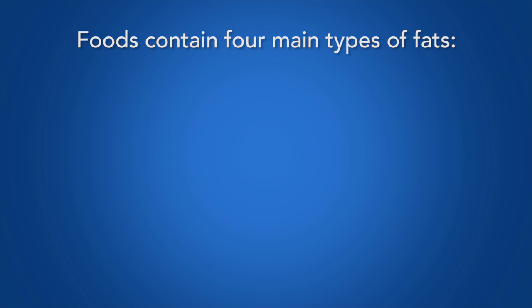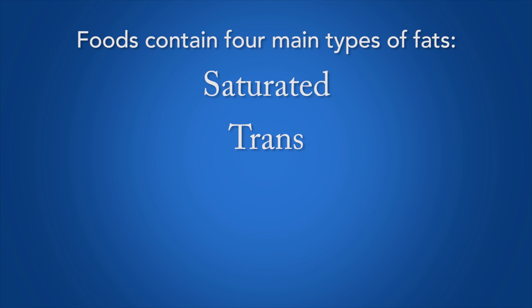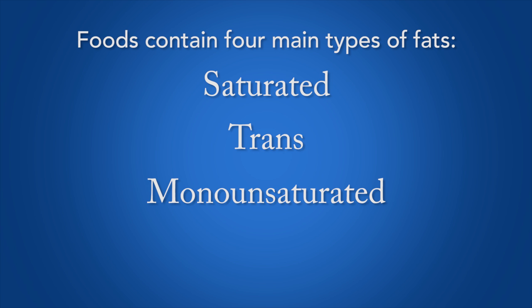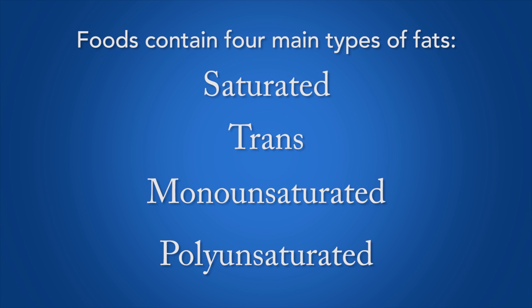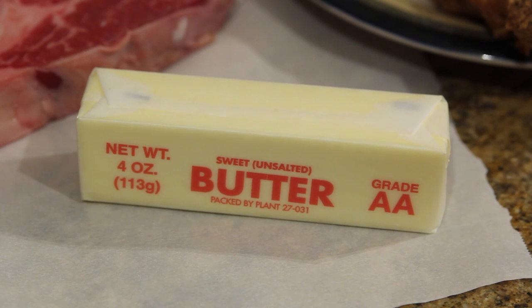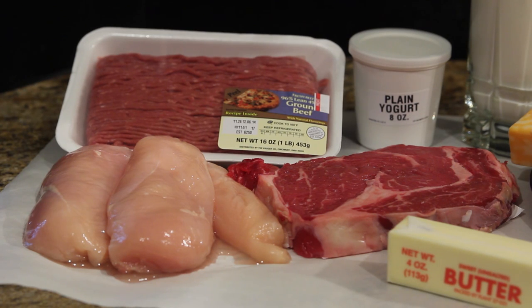Foods contain four main types of fat: saturated, trans, monounsaturated, and polyunsaturated. Fatty foods can be high in any type of fat. For example, meats tend to be high in saturated fat. A diet high in saturated fat can increase risk for heart disease.